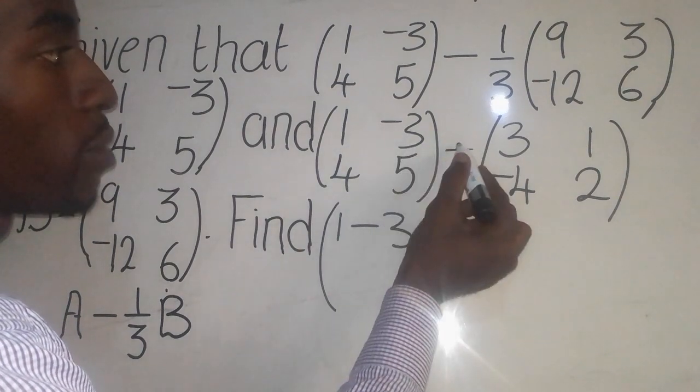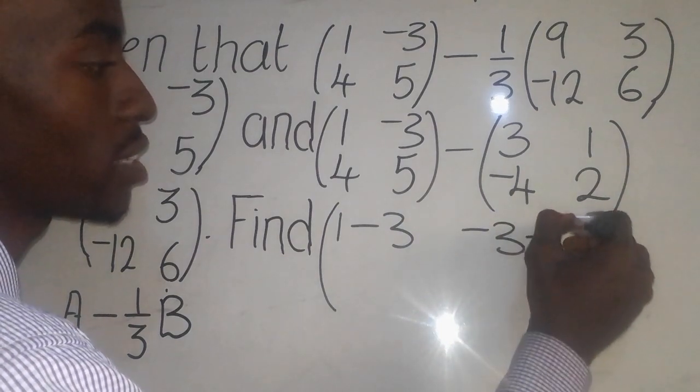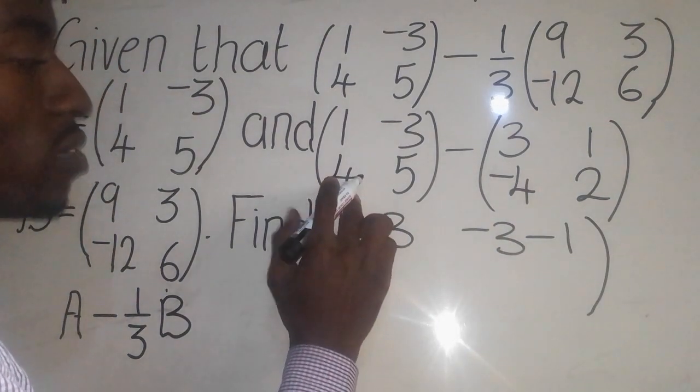So negative 3 minus 1 there. We go now to these values, 4 minus minus 4. So it is 4 minus minus 4, like this.